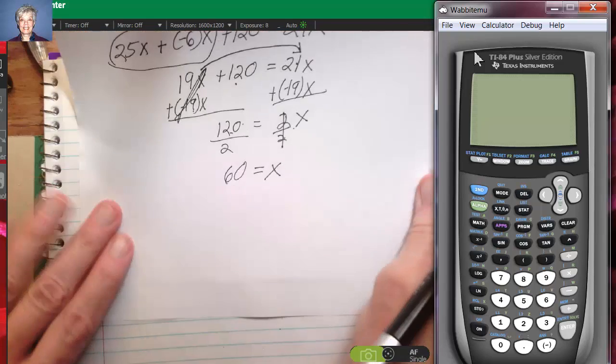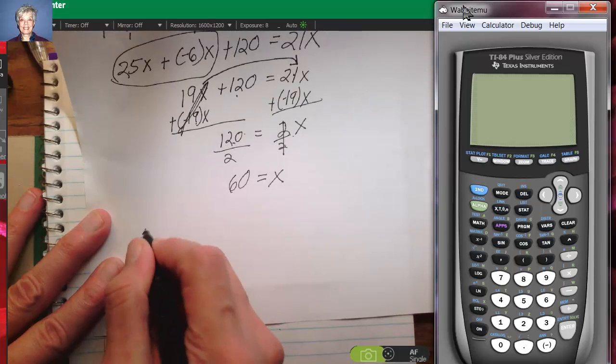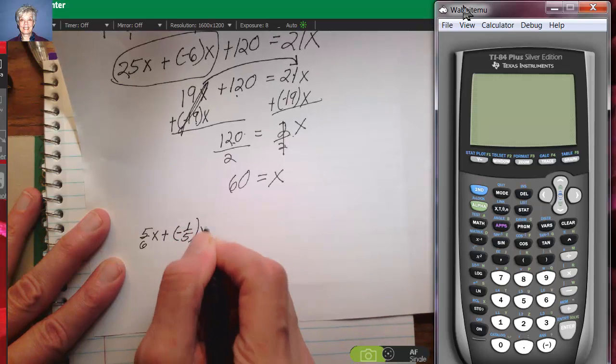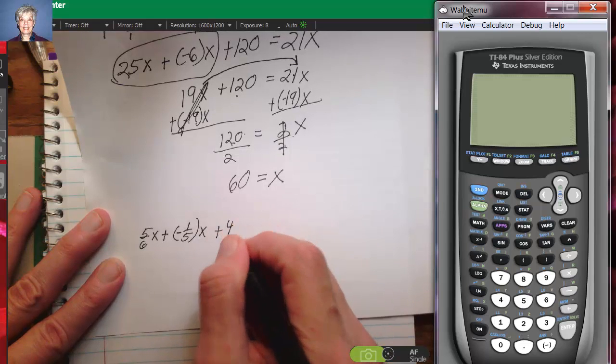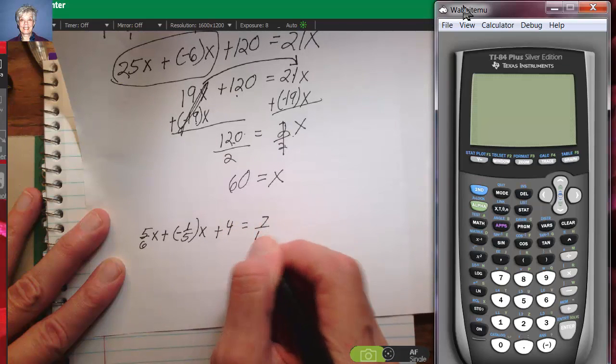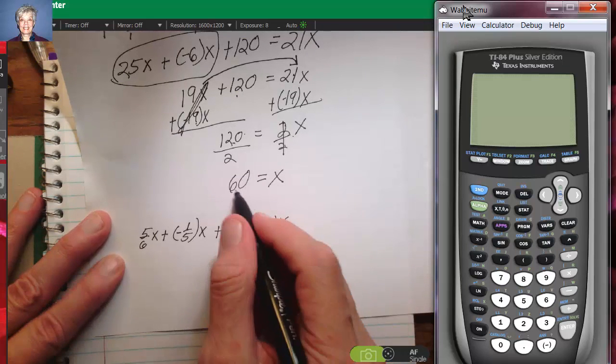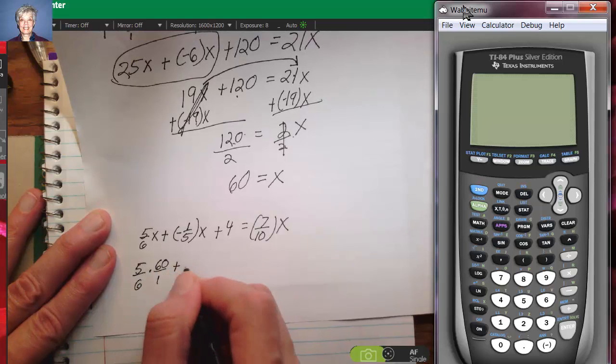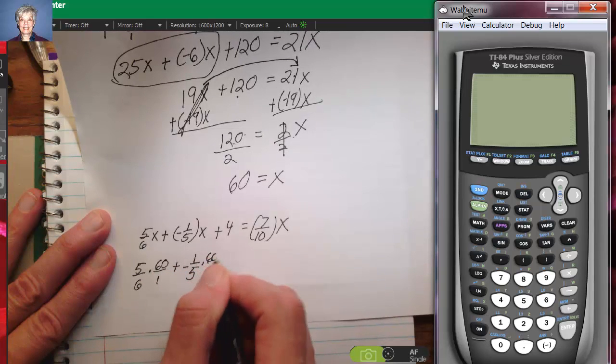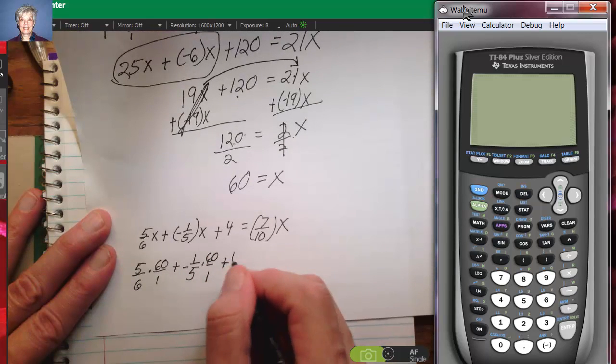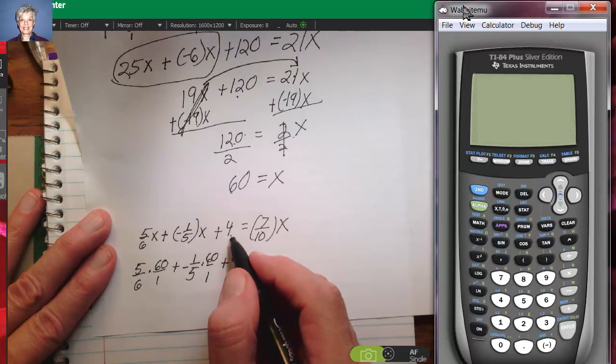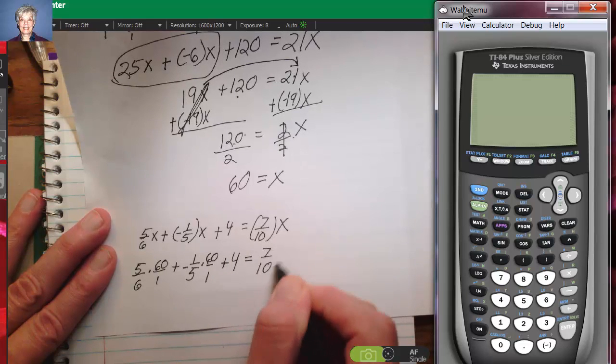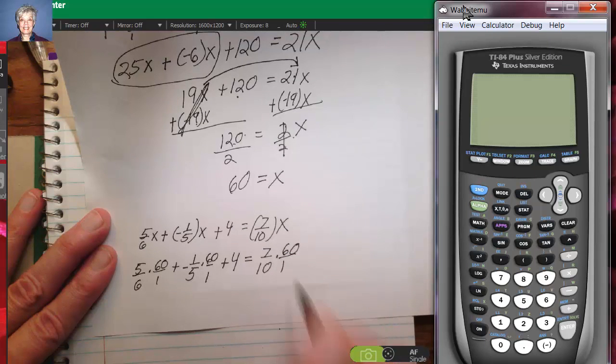My original equation is 5/6x plus negative 1/5x plus 4 equals 7/10x. I'm going to put 60 in for all the x's, so 5/6 times 60 over 1 plus negative 1/5 times 60 over 1 plus 4, now 4 does not have an x, so there's no place for me to put a 60, equals 7/10 times 60 over 1.